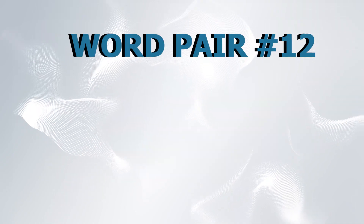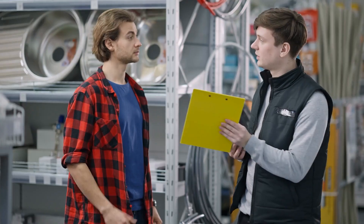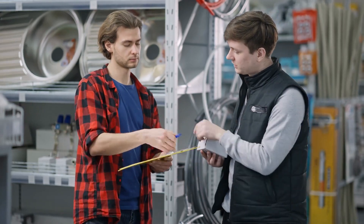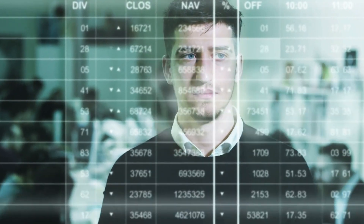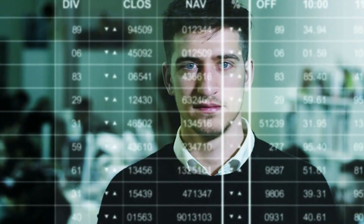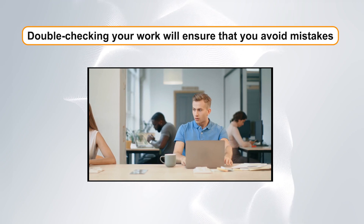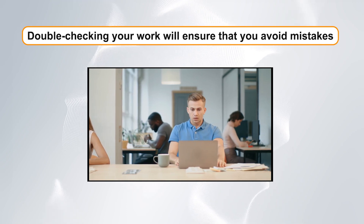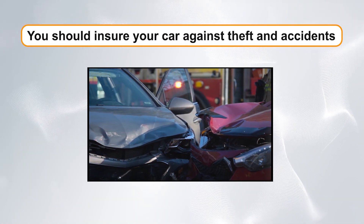Word pair number twelve: ensure versus insure. Next, we have ensure and insure. Ensure means to make certain or guarantee, while insure refers to arranging financial protection or compensation in case of loss or damage. Example sentences: One, double-checking your work will ensure that you avoid mistakes. Two, you should insure your car against theft and accidents.